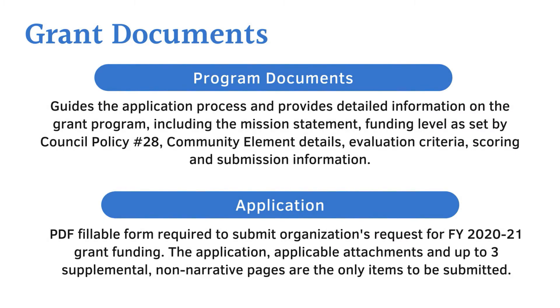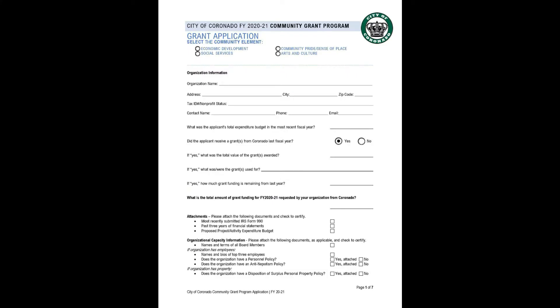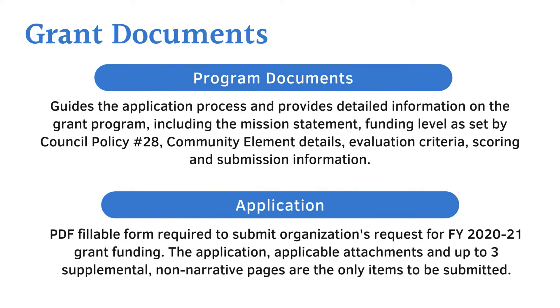The second document is the Community Grant Application. This year, the application has changed. It is now a PDF fillable form. Adobe Acrobat is required to complete the form. Please do not print out and fill by hand, as we will be exporting the data into an Excel file. The narrative portion of the application is four pages long, with the font set at 12 point Times New Roman.